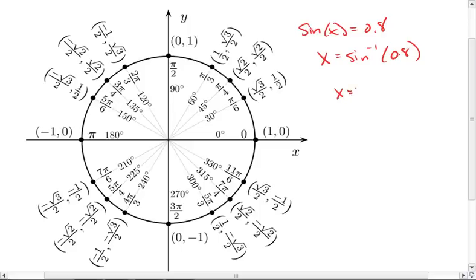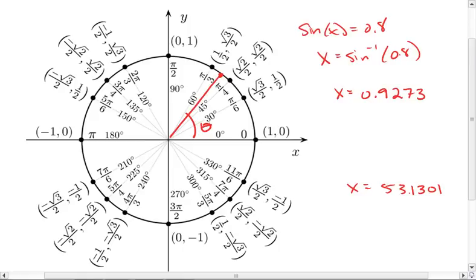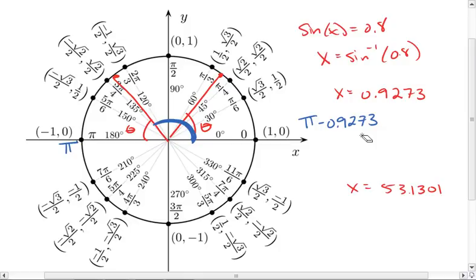We get two options depending on what mode you're in. If we're in radians, sine inverse of 0.8 gives us 0.9273. And if we're in degrees, you get 53.1301. What this means is that we are somewhere on our circle with an angle theta — and that's what that x is. For sine, the corresponding angle is flipped onto the left-hand side, so to find this angle in blue we have to take pi minus theta. So to find the other angle, we do pi minus 0.9273, and that gives us 2.2143.